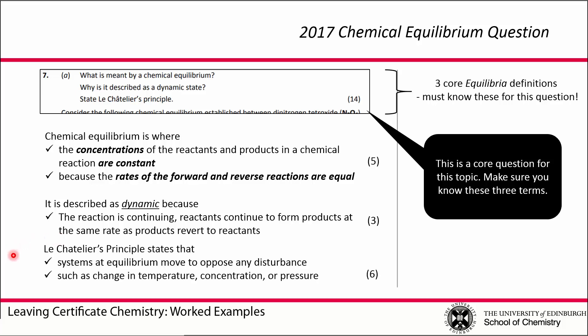Le Chatelier's principle says that when we are at a state of equilibrium, if we disturb that state in some way, the system will try and shift so as to restore the equilibrium. If we apply some external change in temperature, pressure, or concentration, the equilibrium will shift so as to oppose that change. Some succinct and formal ways of stating this are given here along with the marking schemes.